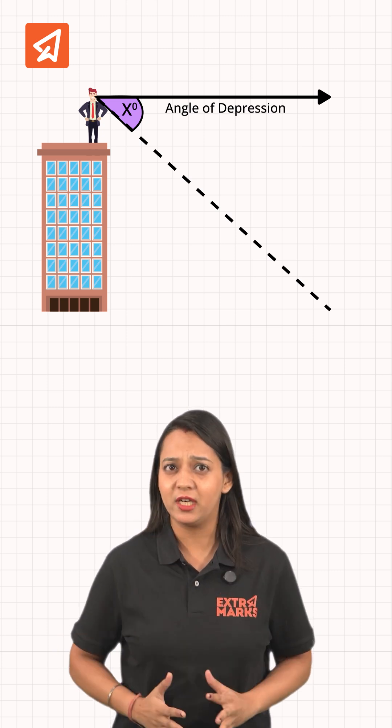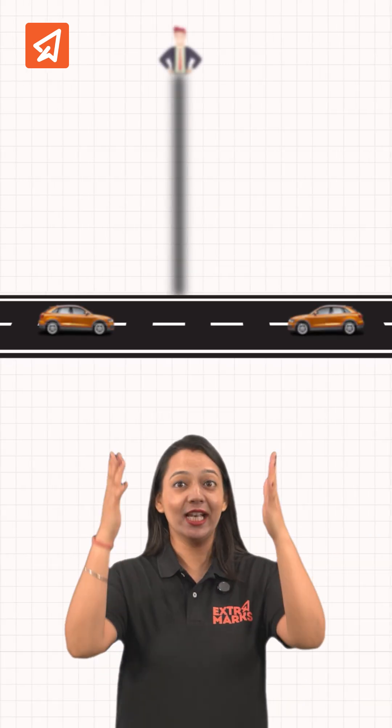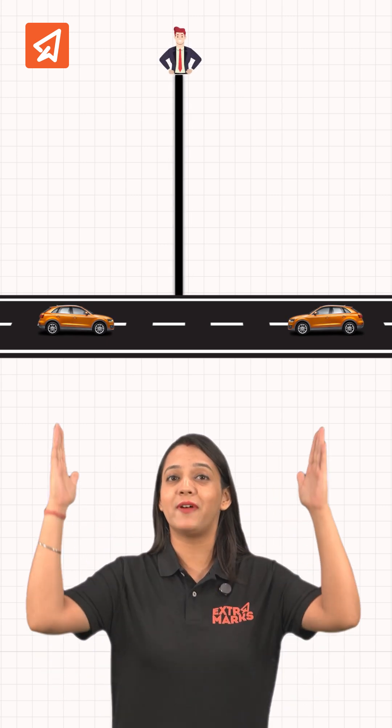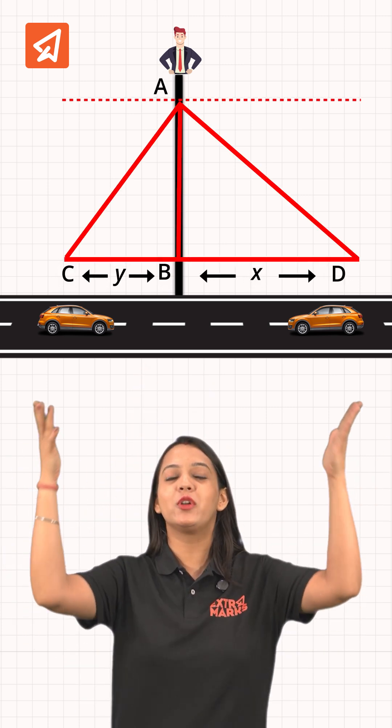Basically, whenever an observer looks downward. Now, let's try out that question. This is a scenario where we have to find the distance between these two cars. For that, we are going to form two right triangles.